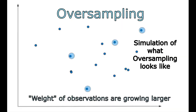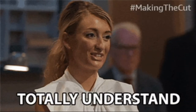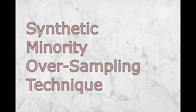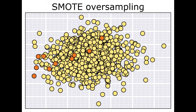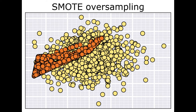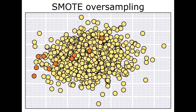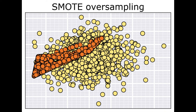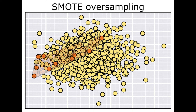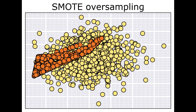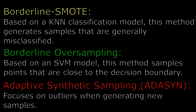The Synthetic Minority Oversampling Technique, commonly known as SMOTE, generates new observations that exist on a line between existing observations. There are three common extensions of SMOTE that I won't cover in this video, but they are shown on screen and may be useful depending on your use case.